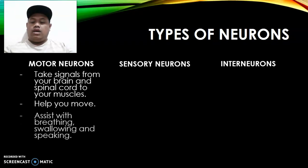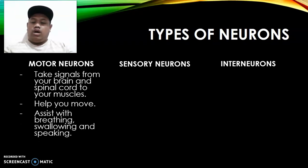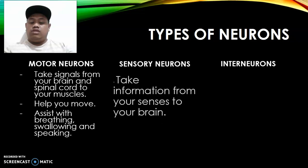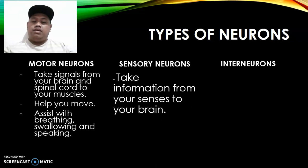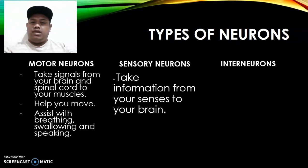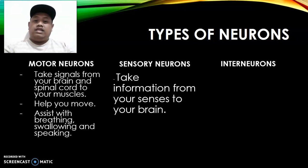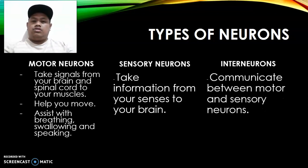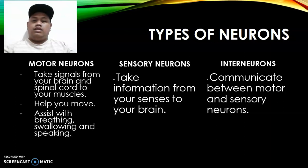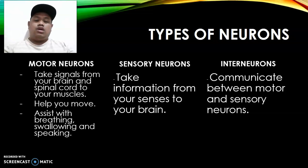Motor neurons help you to move and assist you with breathing, swallowing, and even speaking. Sensory neurons take information from your senses to your brain. For example, when I look at my laptop and see it, that information is processed and interpreted by my brain. Interneurons communicate between motor and sensory neurons — they are the connections between these two types.